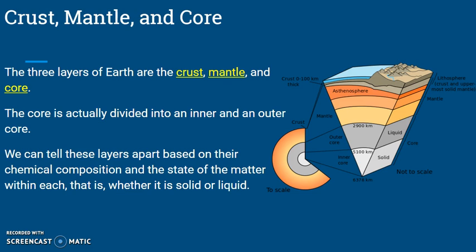The three layers of earth are the crust, the mantle, and the core. In the picture, the crust is up here, this is the mantle, and then this would be the core. The core is actually divided into an inner and an outer core. We can tell these layers apart based on their chemical composition and the state of matter within each — meaning whether it is a solid or a liquid.